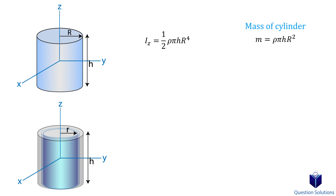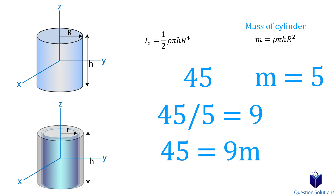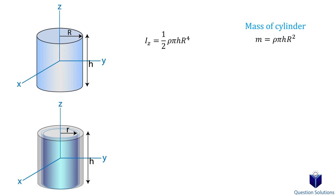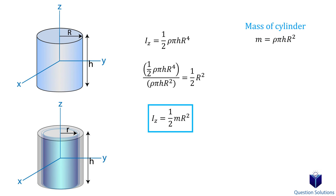This is the mass of our cylinder. To write our mass moment of inertia in terms of mass, we divide the mass moment of inertia by the mass value. For example, if you have 45 and m equals 5, dividing gives 9, so you say 45 equals 9m. That's exactly what we're doing. So now we can write our mass moment of inertia in terms of mass. This tells us the mass moment of inertia for a cylinder about the z-axis — you just need the mass and the radius. The result is very important when we use the disk method in the next few examples.